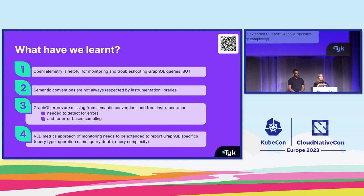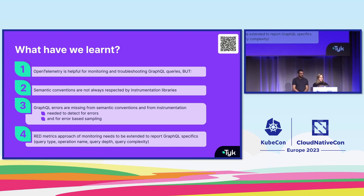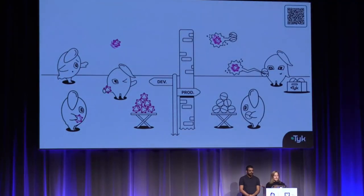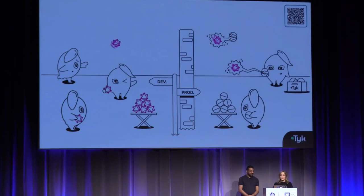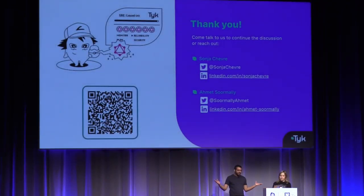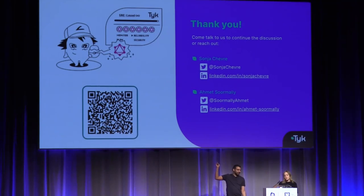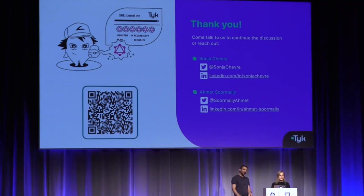The RED method of monitoring for GraphQL is useful but needs to be extended to GraphQL-specific dimensions: query type, operation name, query depth, query complexity, and details about who is calling your GraphQL service. Using OpenTelemetry in production, the operations team now has all the visibility they need to ensure the reliability of the system. Thank you very much — let us know if you've got any questions either now or online using the QR code. A copy of our slide deck is also available via QR code, and we've got special edition KubeCon stickers so make sure you grab some on your way out.